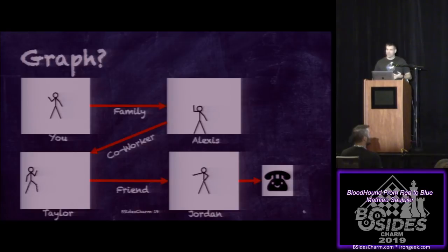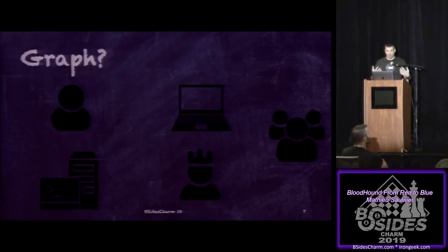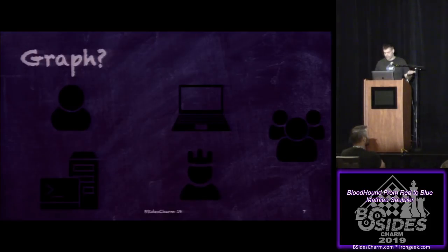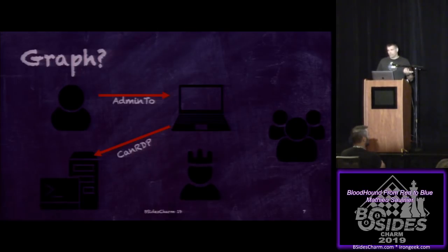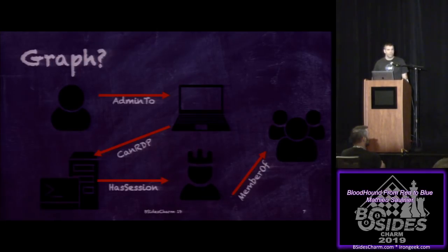A graph for an attacker or defender would look something like this: an attacker lands somewhere, usually impersonating a user through password spray, phishing, or other means. That user might have admin rights to their own machine — a very bad InfoSec practice, but it happens. From that machine you might RDP to a terminal server that has hundreds or thousands of user sessions. Among all those users, one has a crown — they're a member of a high-value group like domain admin. This is what BloodHound shows you.